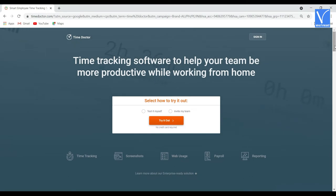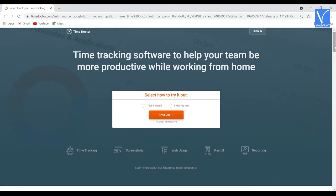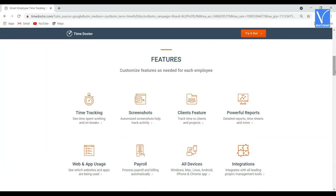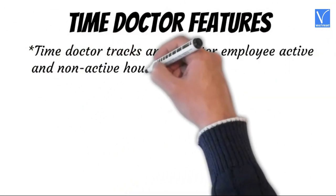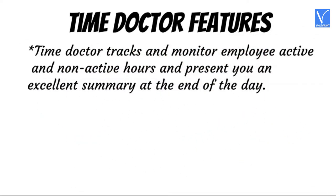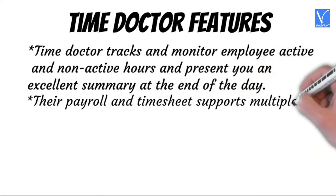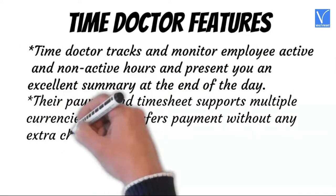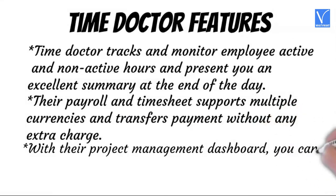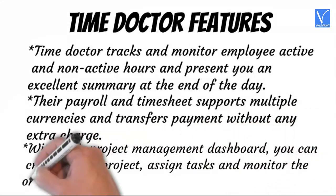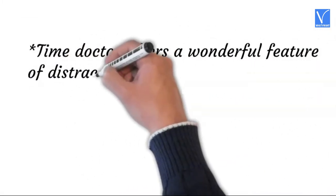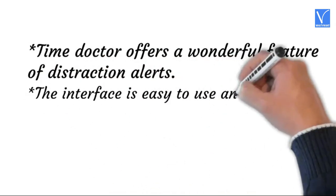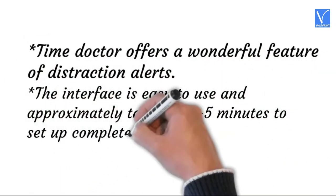Number five: Time Doctor. Time Doctor is undoubtedly one of the best employee time tracking software for larger organizations with 20 to 500 employees. It is not recommended for small businesses. Time Doctor features: it tracks and monitors employee active and non-active hours and presents an excellent summary at the end of the day. Their payroll and timesheet supports multiple currencies and transfers payments without any extra charge. With the project management dashboard, you can create a new project, assign tasks, and monitor the ongoing process in a single place. Time Doctor offers a wonderful distraction alerts feature. The interface is easy to use and takes approximately 3 to 5 minutes to set up completely.